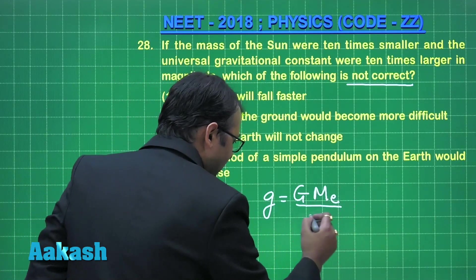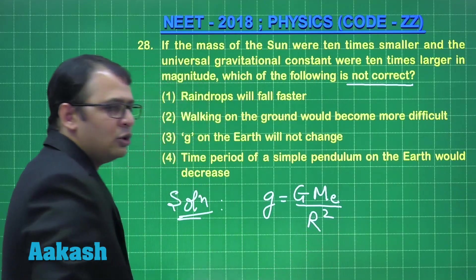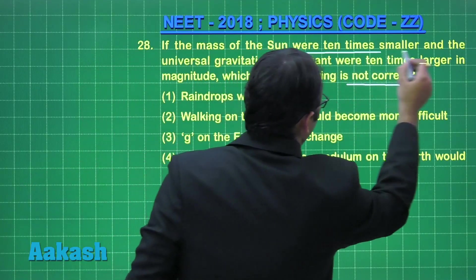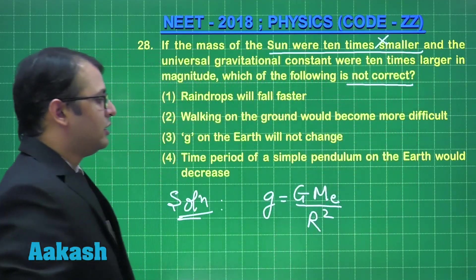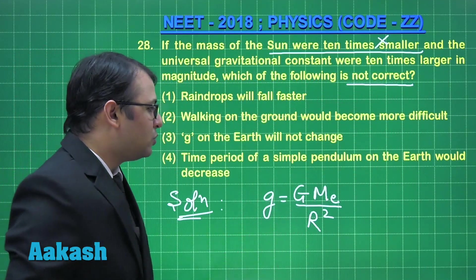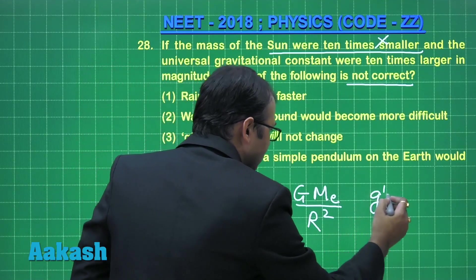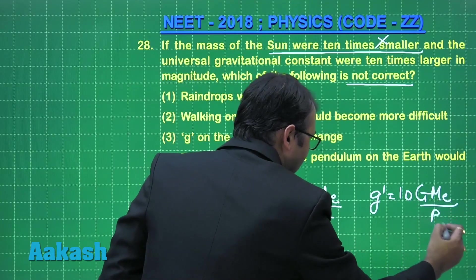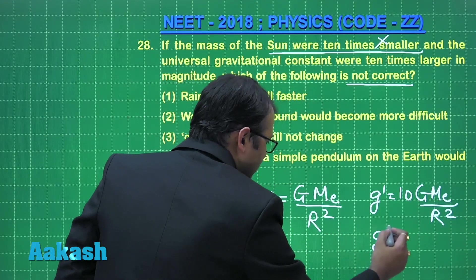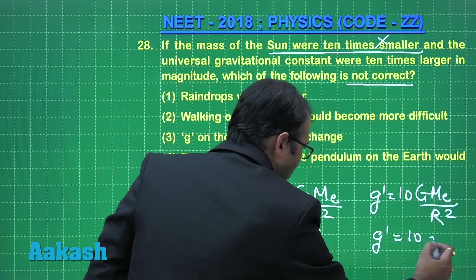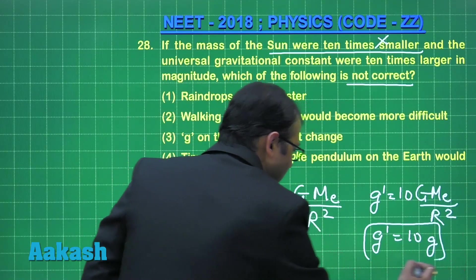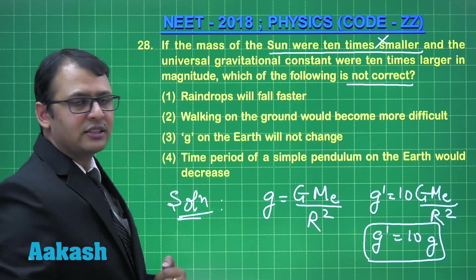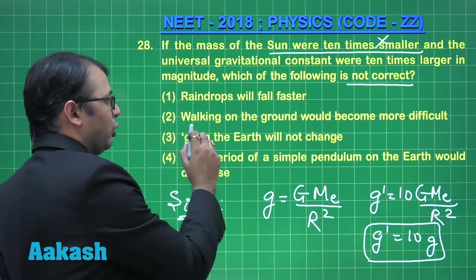The formula for small g on Earth is G × M_E divided by R_Earth squared. There is no effect of the Sun's mass here, so that part is irrelevant. If G increases 10-fold, then g on Earth becomes 10 times larger, meaning the effect of gravity increases. So raindrops will fall faster — correct. Walking on the ground will be more difficult — correct.